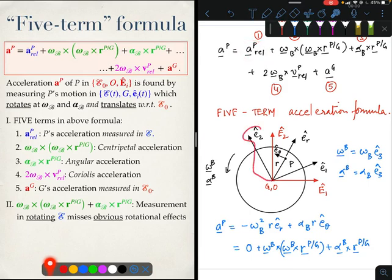The fourth term will vanish for the same reason that a_P_rel vanished. In the BFCS frame, point P will appear to be fixed, so that the relative velocity of P to the BFCS is zero. So the third term also goes away.